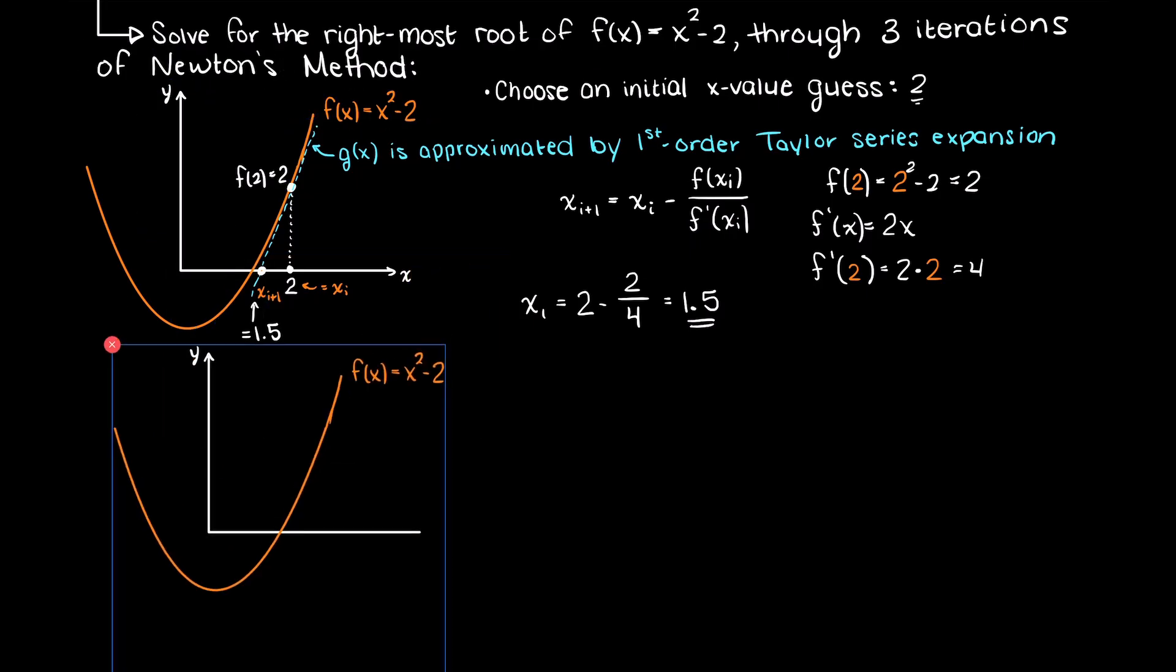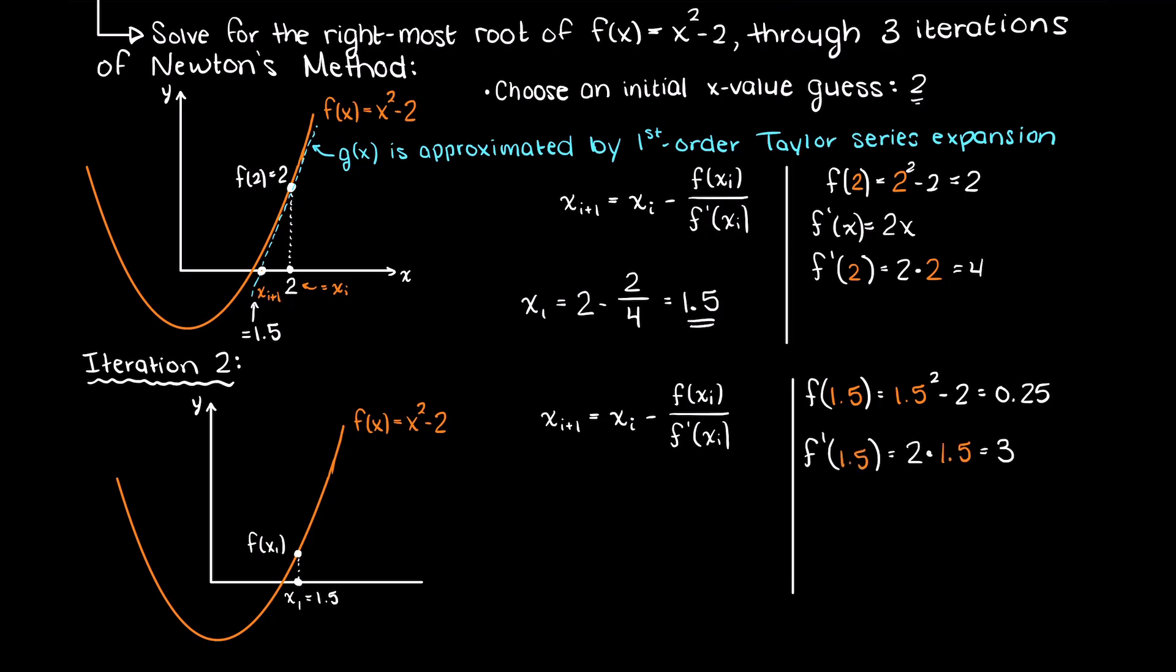Moving forward, we just need to continue repeating this procedure that we just did. So, all we have to do is evaluate our function, and the derivative, at 1.5. Then, we can find the next value of x. The approximate root at our second iteration here is equal to 1.416.